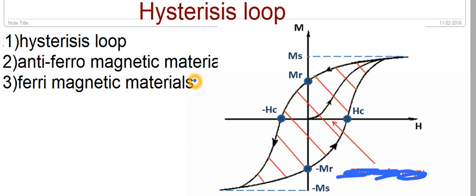Suppose if we make the temperature constant at some particular value below the Curie temperature, the magnetization of the specimen is zero initially when the field is not applied, because in ferromagnetic materials the domains will be oriented randomly and the net magnetization won't be there. So if we apply the magnetic field externally, the domains start orienting themselves along the direction of the external magnetic field. Here M is the magnetization of the material and H is the external magnetic field applied.